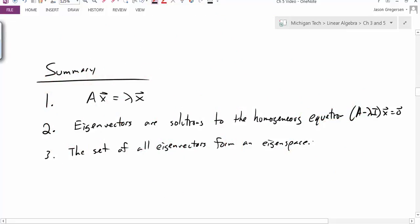So to summarize, we've seen that we have the equation Ax equals lambda x, and that defines our eigenvectors and eigenvalues. We've also seen that eigenvectors are solutions to the homogeneous equation (A minus lambda I) times x equals 0. So we did the algebra to show that the solutions to this homogeneous equation are the eigenvectors. And lastly, we've talked about how the set of all eigenvectors forms a vector space, which we call the eigenspace. And that concludes this video. Thank you.